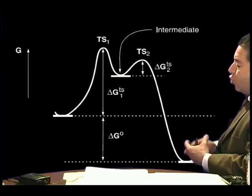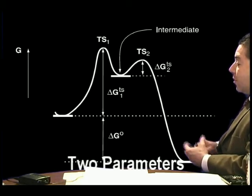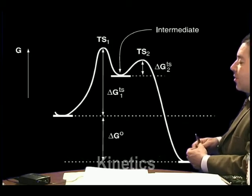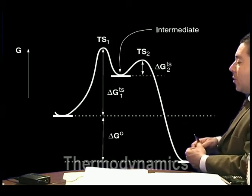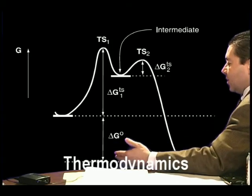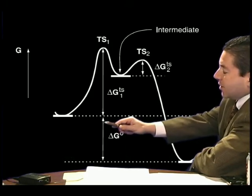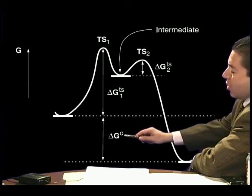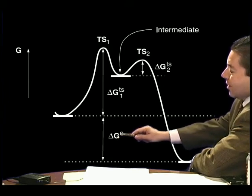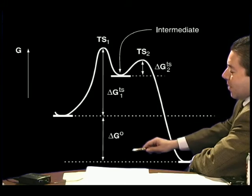And there are two parameters, the kinetics and the thermodynamics. The thermodynamics is the difference of energy between the product and the reactant, and that is the delta G naught. That defines the thermodynamics.